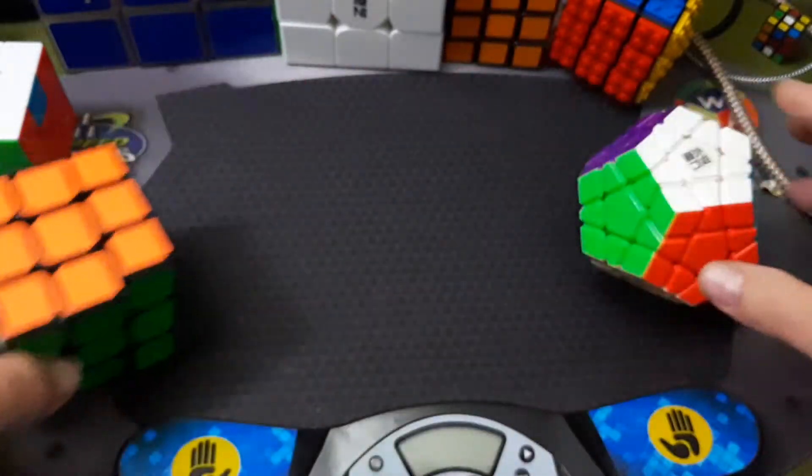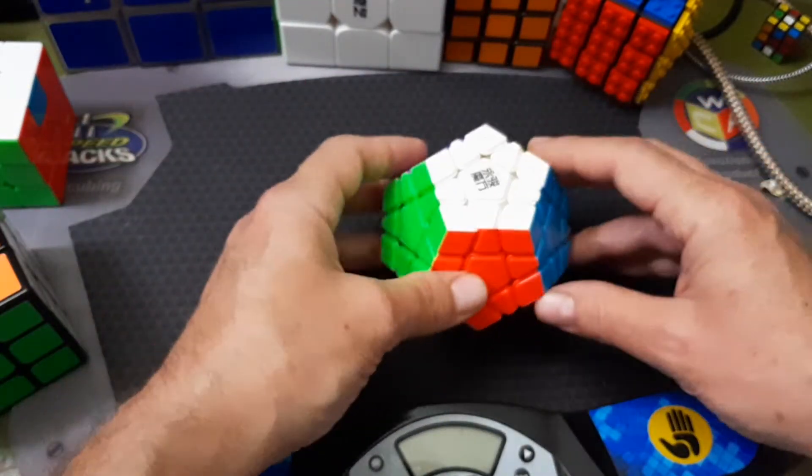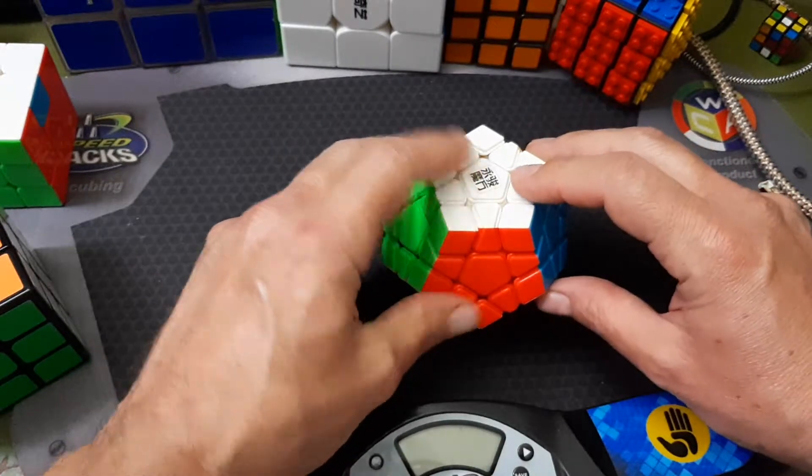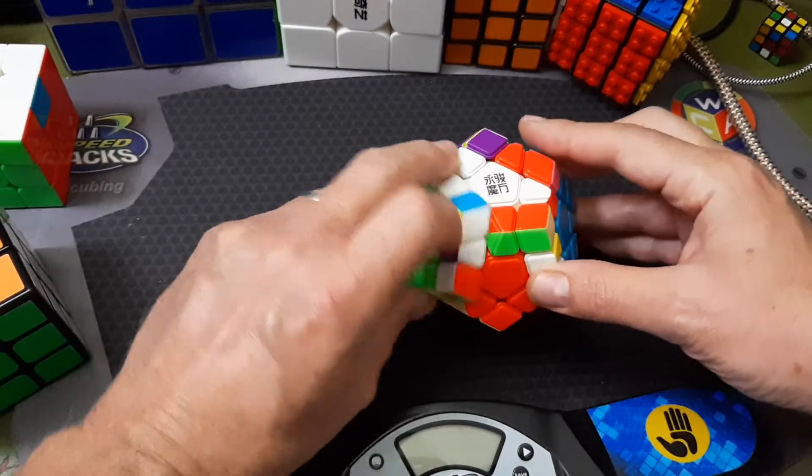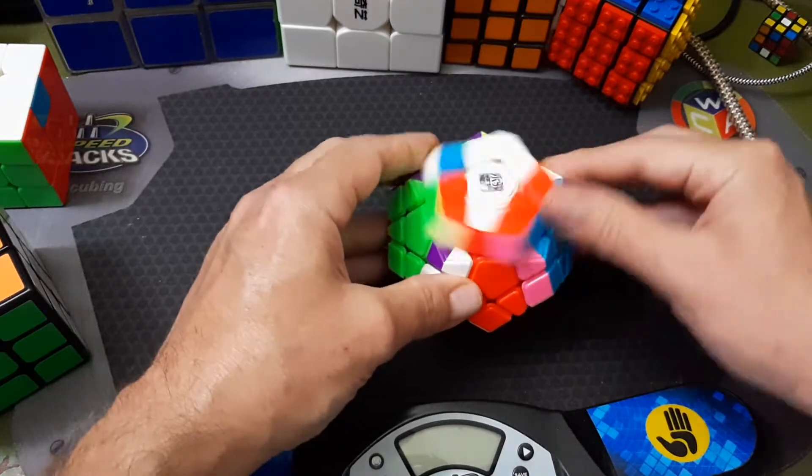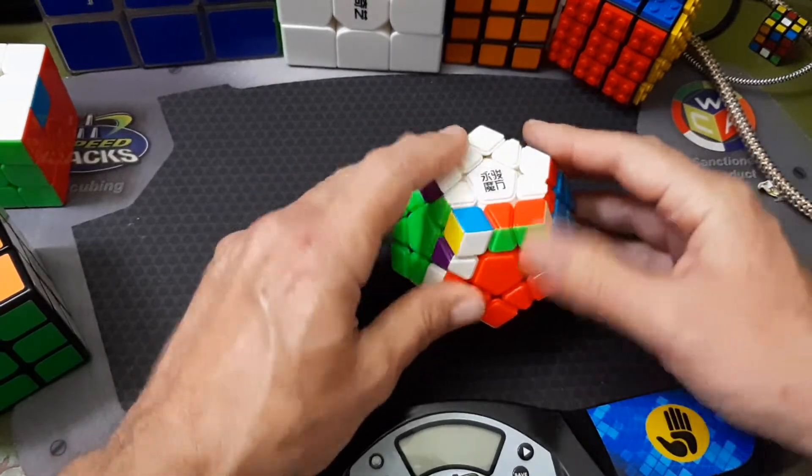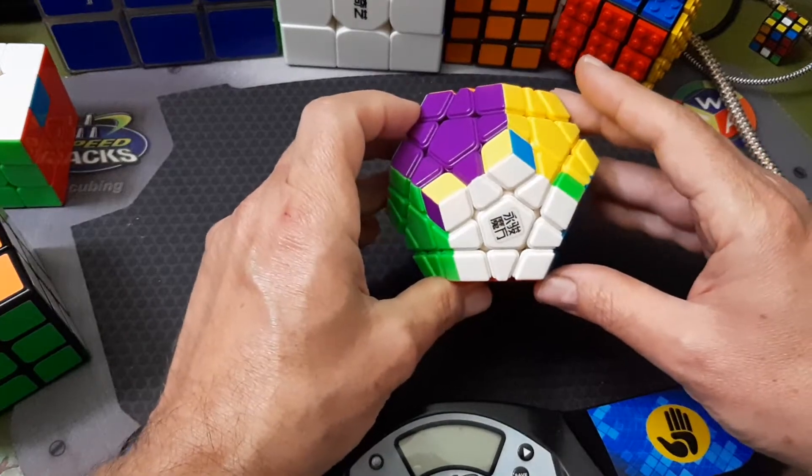And we're back. So now if you do this on Megaminx with the two faces right next to each other, it's a three cycle of corners.